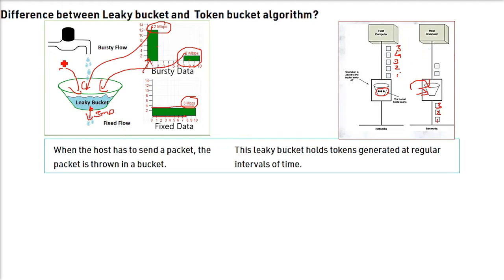So, the first one - leaky bucket: when the host has to send a packet, the packet will be first thrown into a bucket. You can call it as a buffer. In the token bucket, the packet has to hold the tokens generated at regular interval of time.